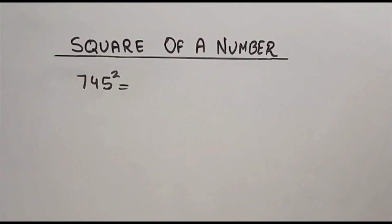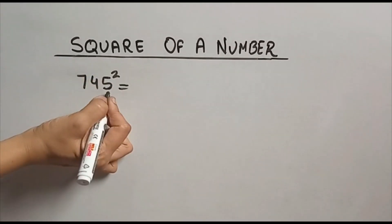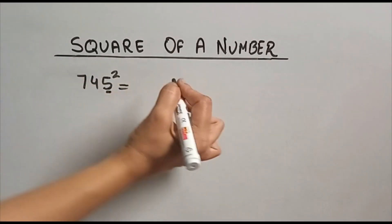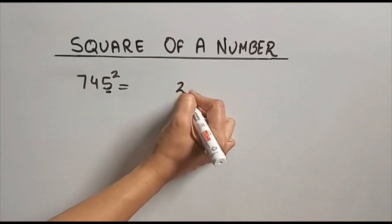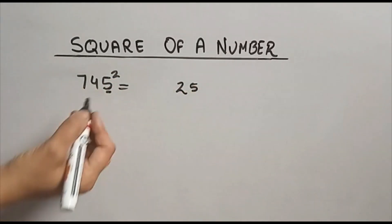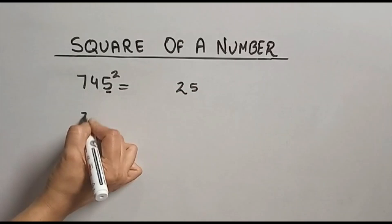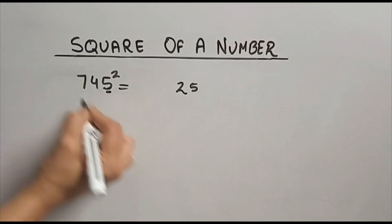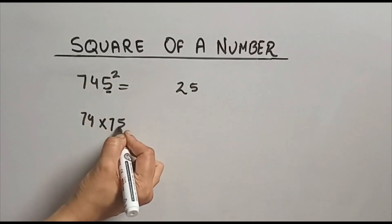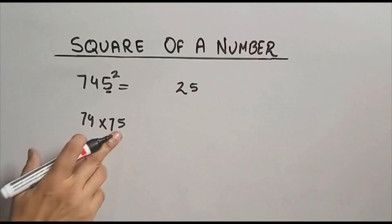Now the next number is 745. We have to find square of this. Again, this unit place is 5. Square this: square of 5 is 25. Now omit this 5, what you will get? 74. 74 plus 1 is 75. Multiply 74 and 75.